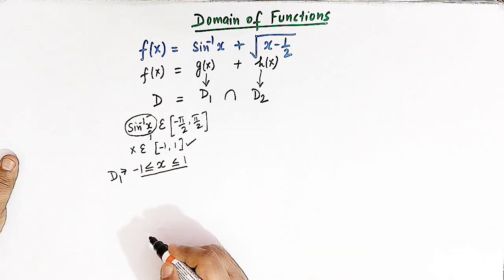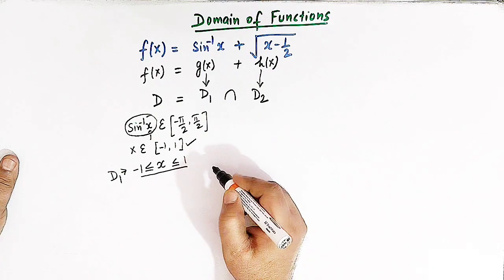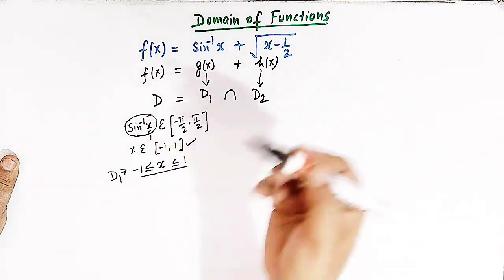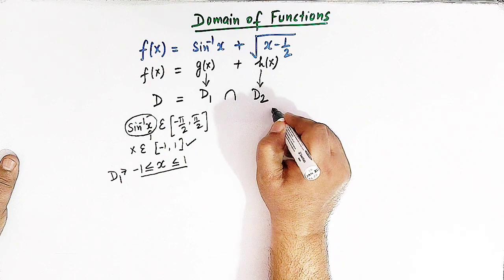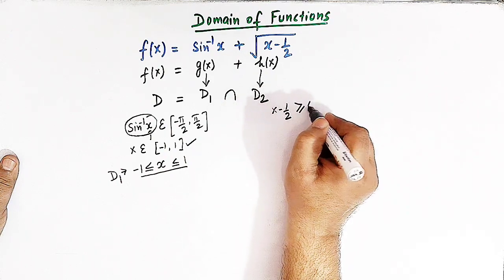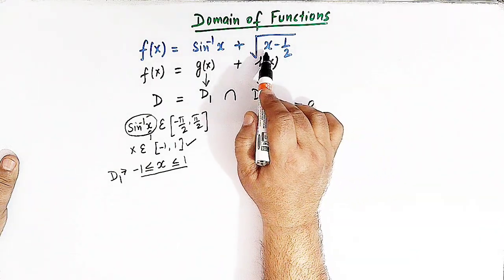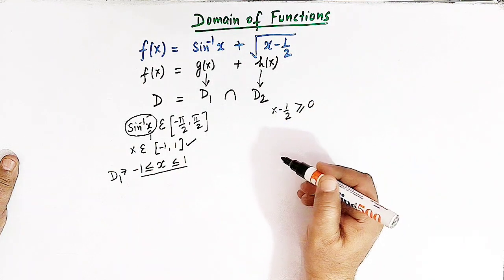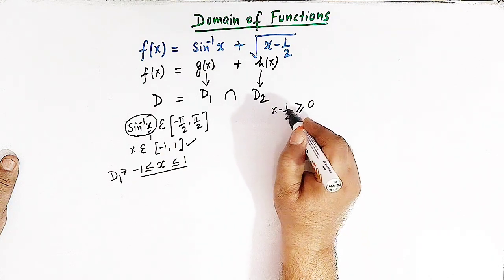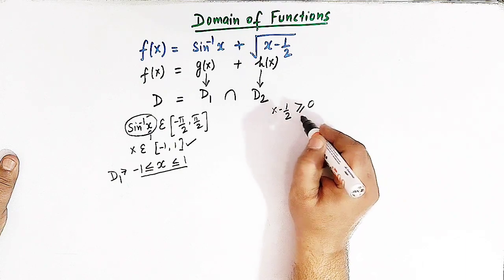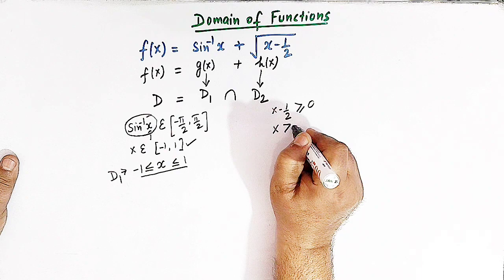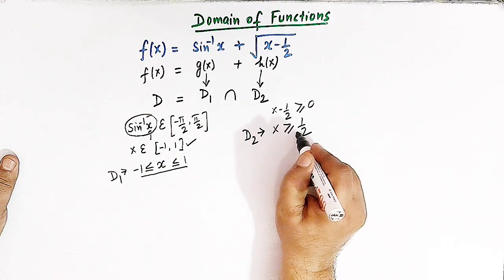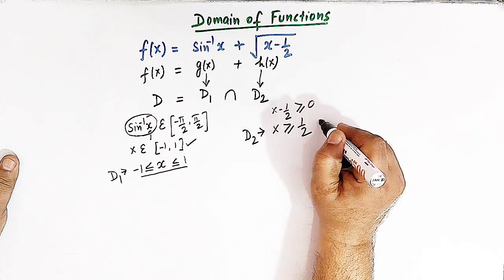Now let us find d2. Here we have the square root function, and anything inside the square root must be positive or equal to 0. So x minus 1/2 should be greater than or equal to 0, because we cannot have a negative number inside the square root sign — the result would not belong to the set of real numbers. So for x minus 1/2 to be non-negative, we need x greater than or equal to 1/2. So d2 is given by x belonging to the interval from 1/2 to infinity.